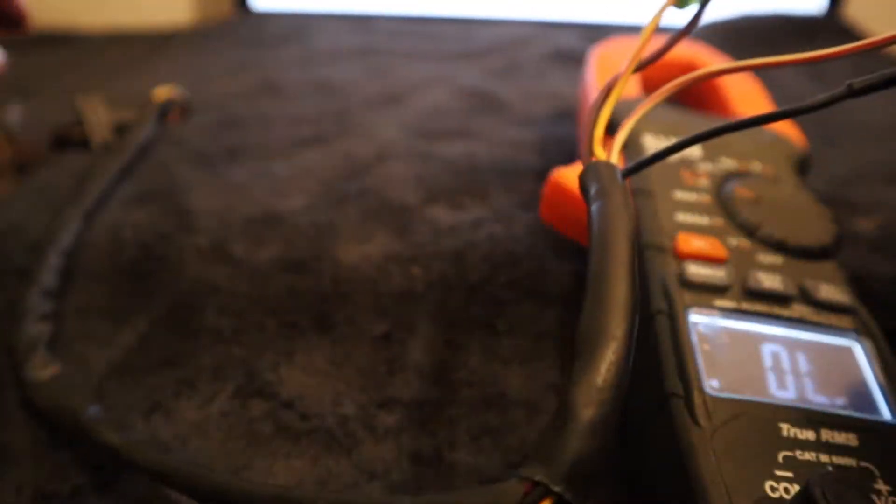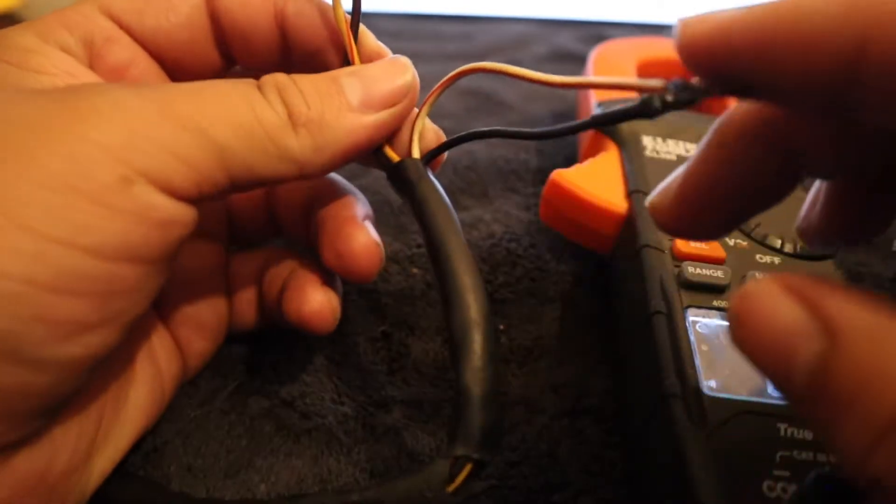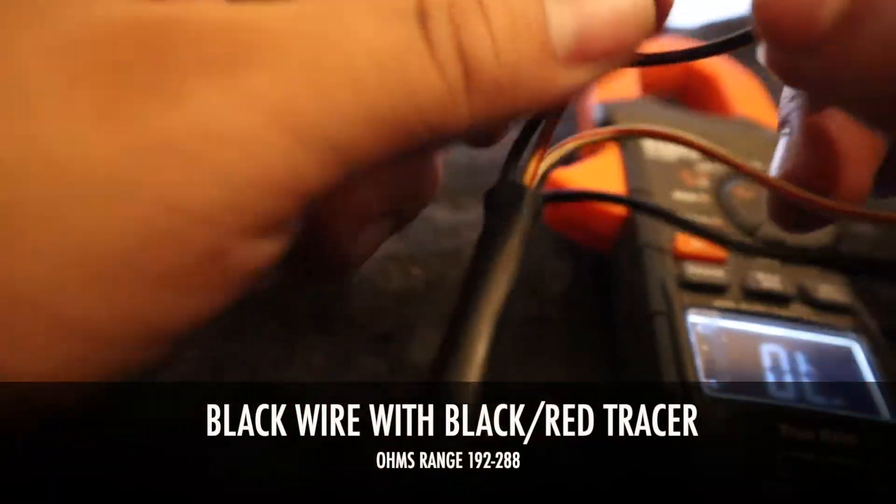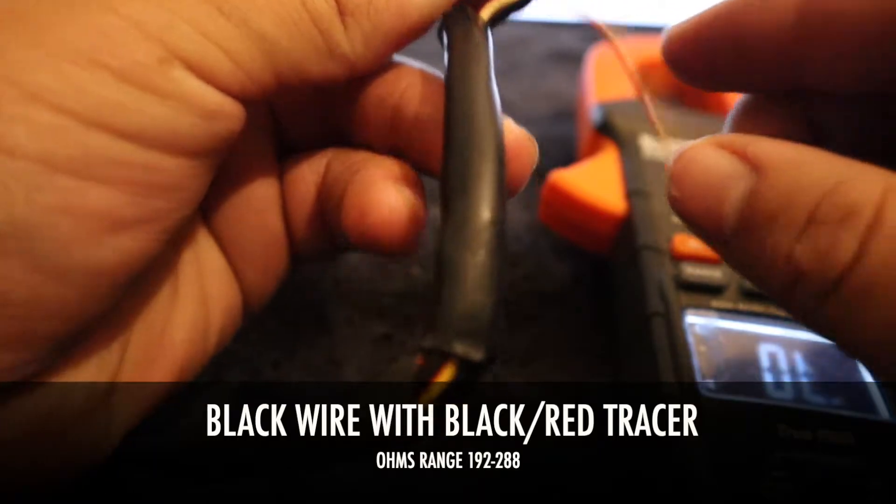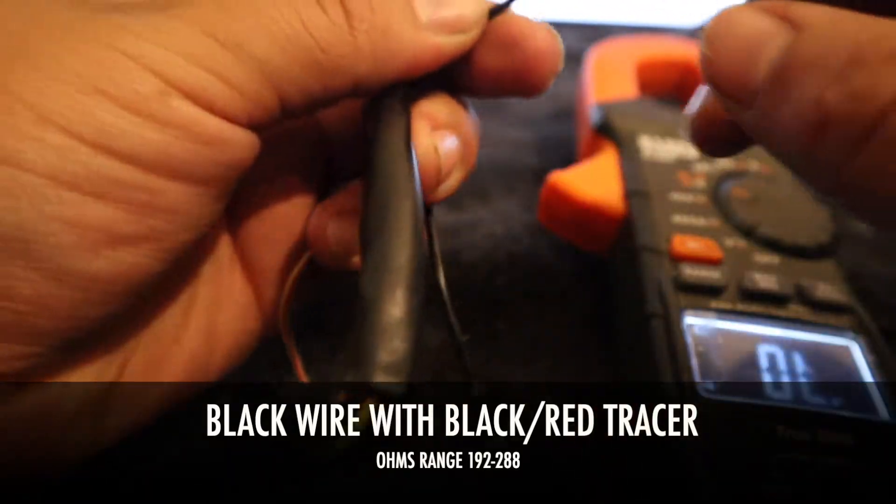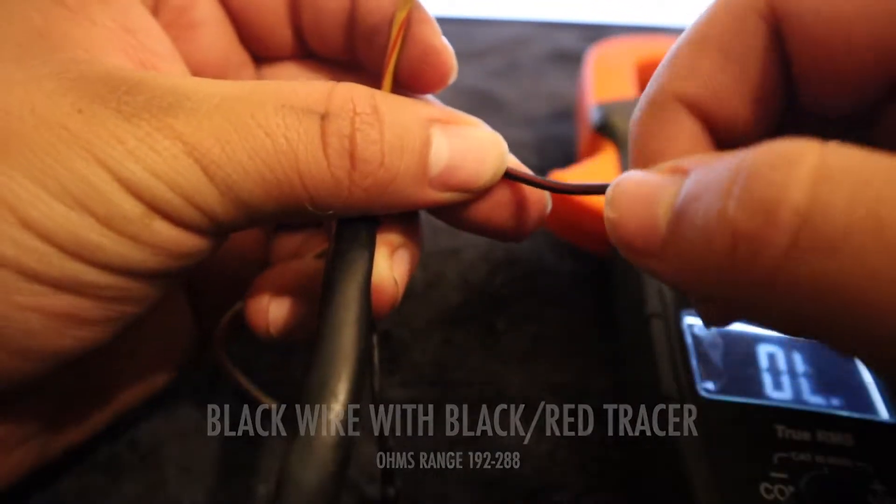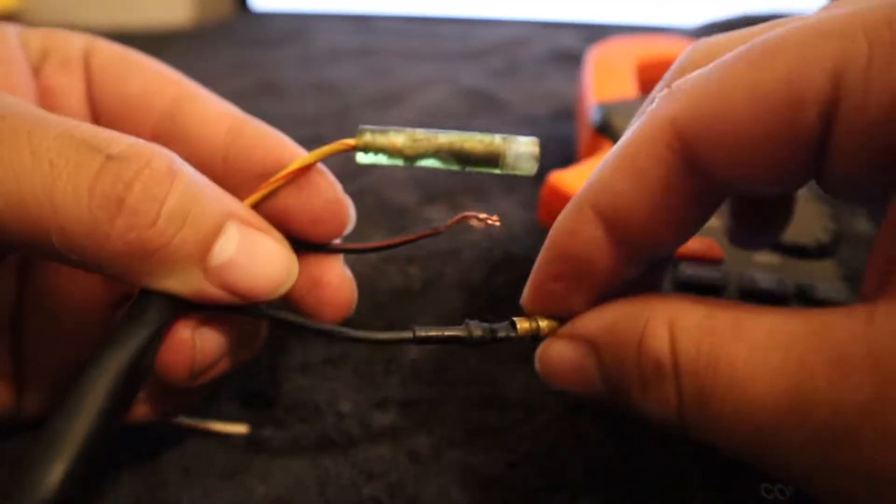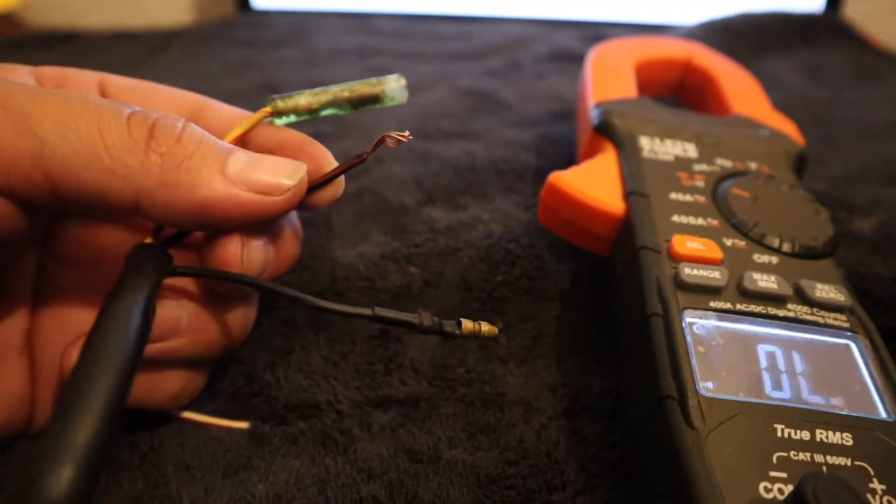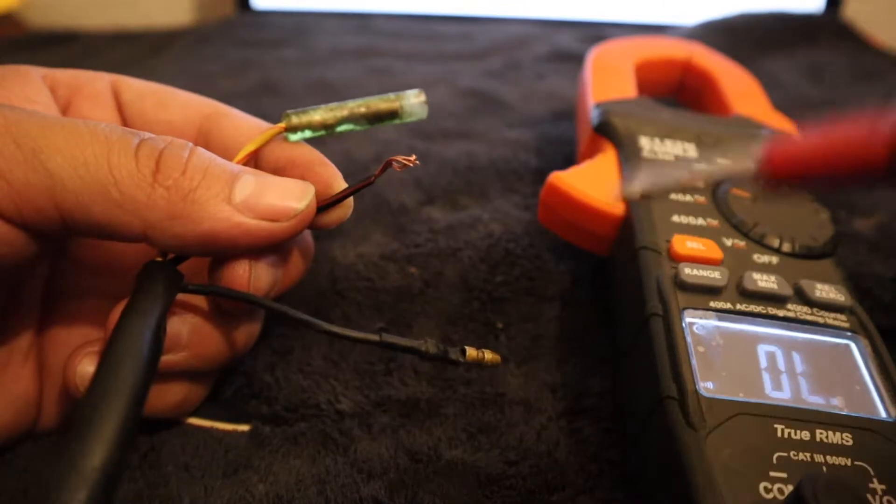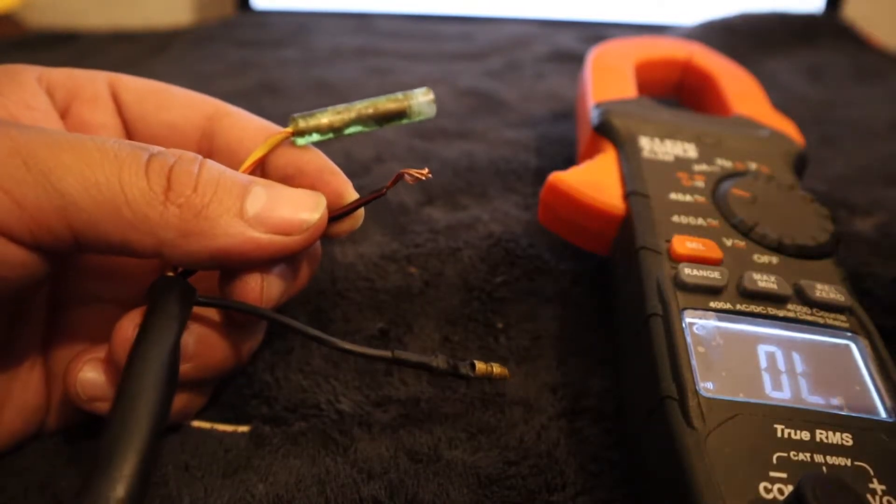Now we're gonna test the other two wires which is the black wire and the black and red wire. So we're gonna test the solid black wire with the black wire with the red tracer and we should get ohmage. If not, if it's out of range it's bad, and if it's not picking up anything there's a short somewhere in this wire or on these pickup coils or it's a bad pickup.